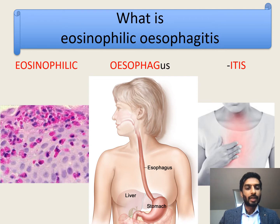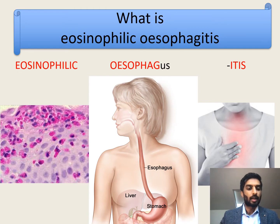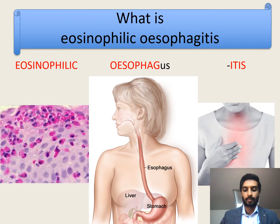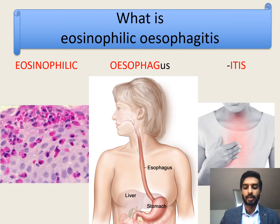Eosinophilic refers to a specific type of white blood cell called eosinophils, and these are the type of cells which predominate when we look under the microscope in a person with eosinophilic esophagitis. You can see in this slide a microscopic specimen of a patient with EOE showing a lot of reddish colored cells — those are the eosinophils that are a major factor in this condition. That's where the term eosinophilic esophagitis is derived from.